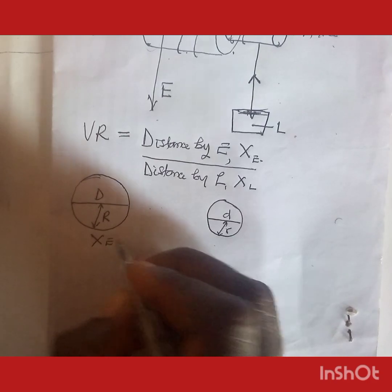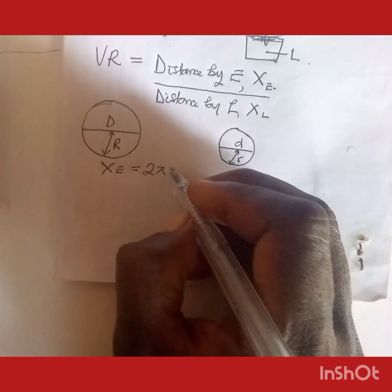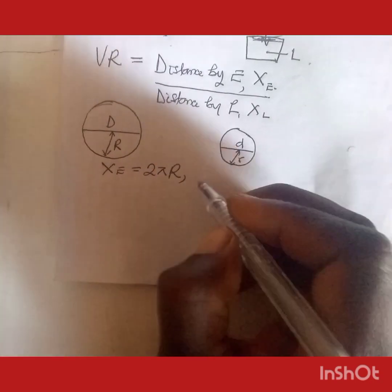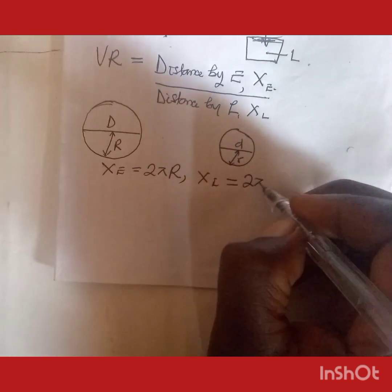X_E equals 2π times capital R. That of the load, X_L, equals 2π times lowercase r.